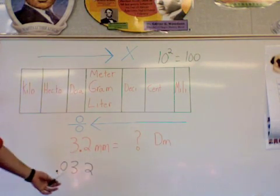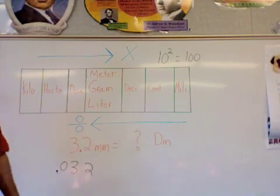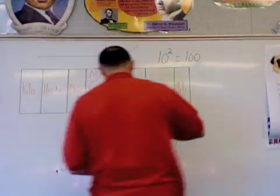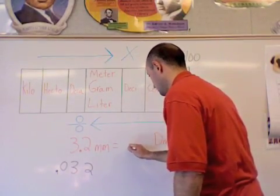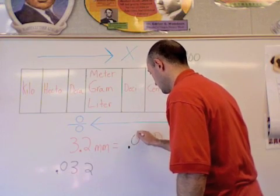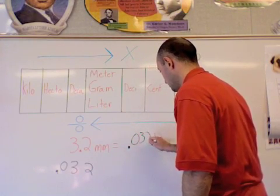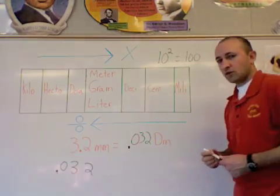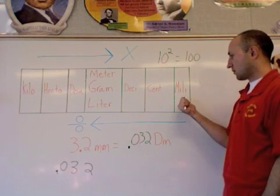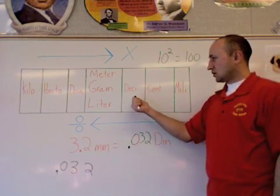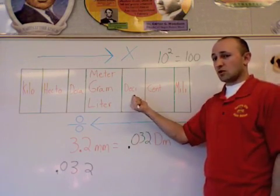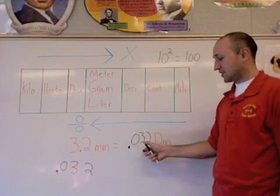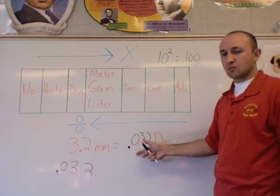If I put a zero in front of that and ignore my old decimal and lines, I now have a new answer: 0.032 decimeters. And if I really think about that, it does make sense, because I went from a smaller unit of measurement to a larger one, so that means the number attached with it is going to get smaller.